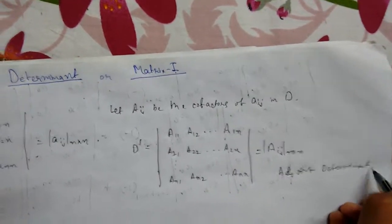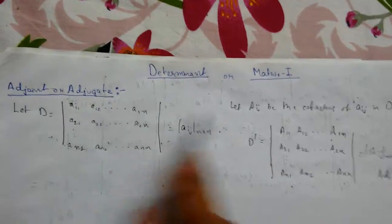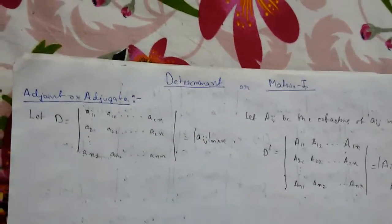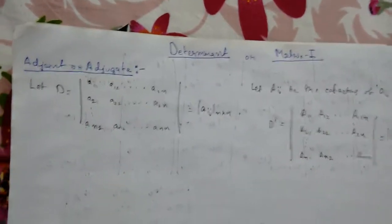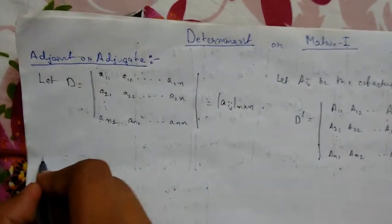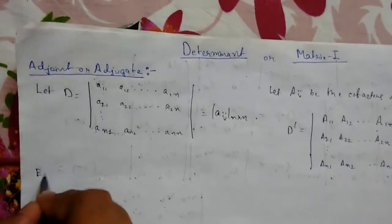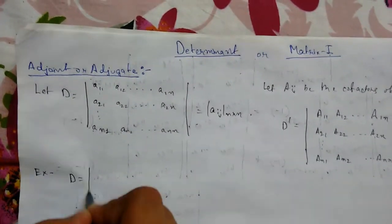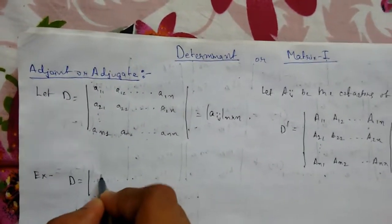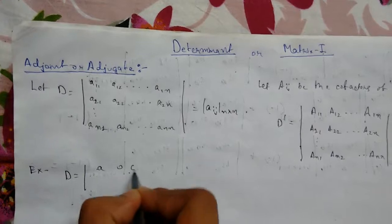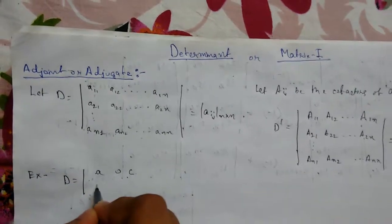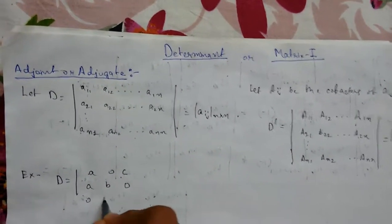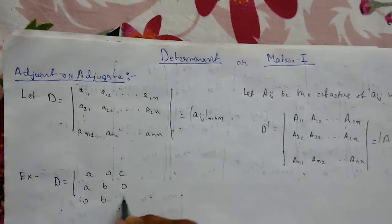So what we need to do is replace the elements by their cofactors and put them back into another determinant. Let me explain this by an example which will make everything clear. Suppose we have a determinant of order 3: a, 0, c; a, b, 0; 0, b, c.